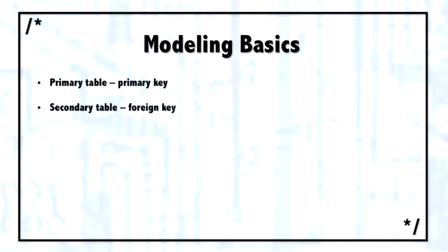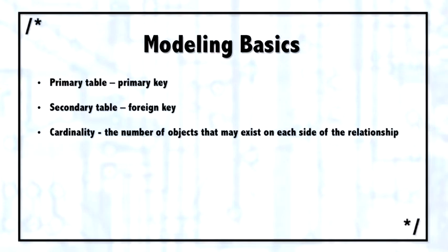Three other key terms. One is cardinality, which means how many objects can exist on each side of that relationship. For example, is it one to one, one to many? Cardinality is usually described as either zero, one, or many. Zero, one, or infinity.